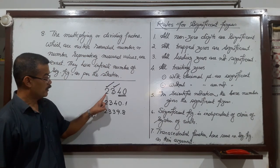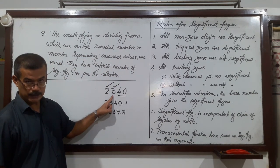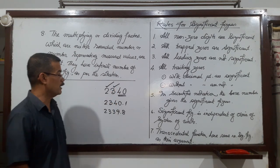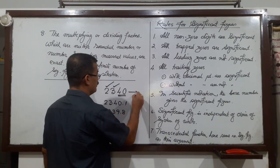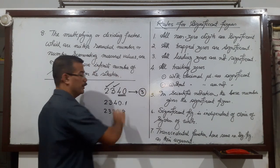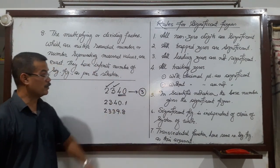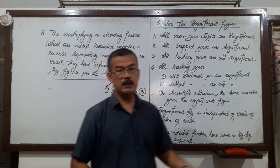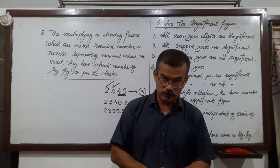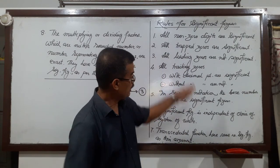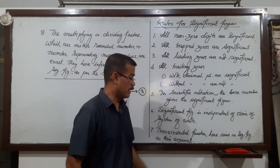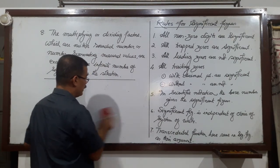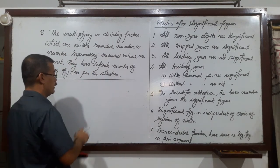For this case, 3 is certain, so 4 is uncertain. The total number of significant figures is therefore three. We also need to consider what happens with zeros and whether they are significant or not.